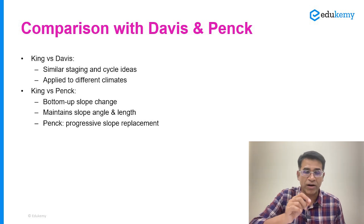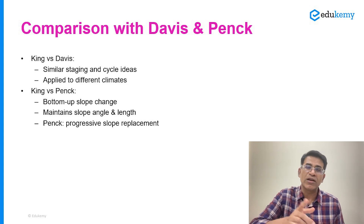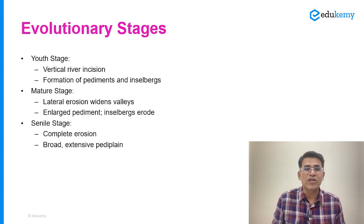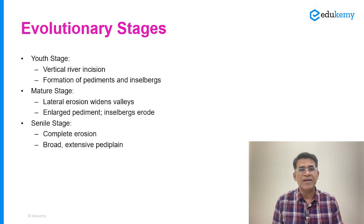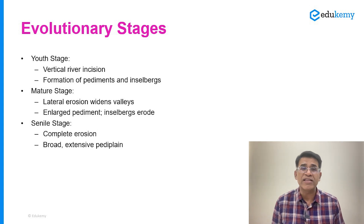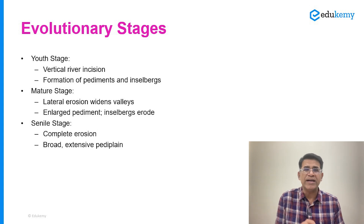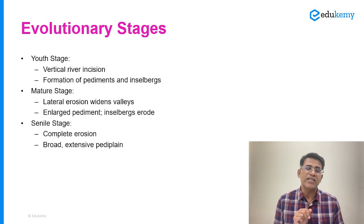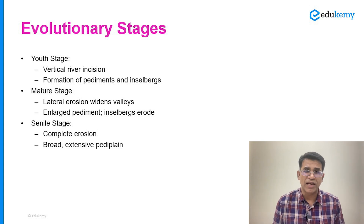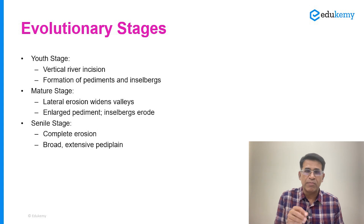Like Davis's model, LC King's model also has stages — three stages. In the youthful stage, the river is cutting vertically and cuts many nick points from where erosion starts. A very small pediment begins developing, and inselbergs also form in the youthful stage. Comparing with Davis's model, monadnocks are features of the senile stage, whereas in LC King's savannah cycle of erosion, pediments and inselbergs appear right from the late youth stage.